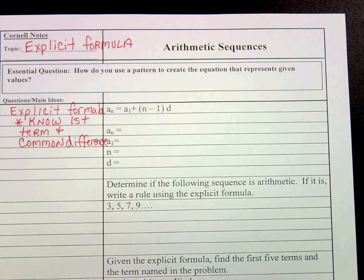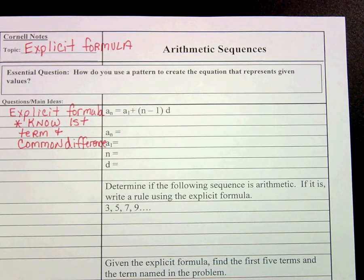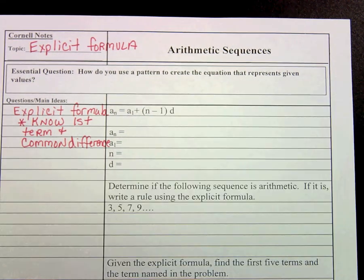If you remember when we learned about the recursive formula, that formula was based on knowing the preceding term. So in that one, you wouldn't even necessarily need to know the first term. You would just need to know any consecutive terms in the sequence, and then you could write a rule.